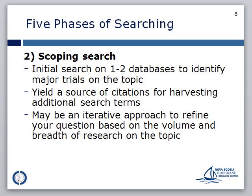In the next step, you will develop and test your search strategy, starting in one or two databases. This will help you identify major trials on the topic and lead to further refinement of your search and possibly revision of your review question. The scoping search will yield citations that can provide you with additional search terms in order to create a comprehensive search strategy. This may involve an iterative process wherein you refine your question based on the volume of results and the breadth of the research on the topic.